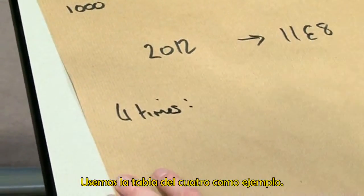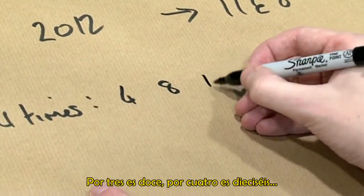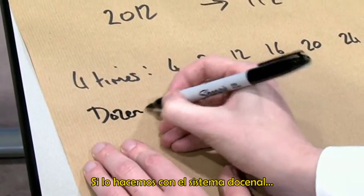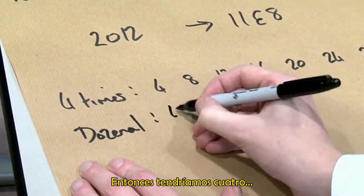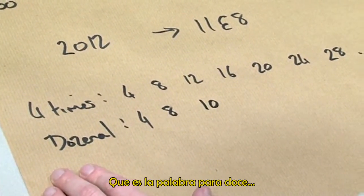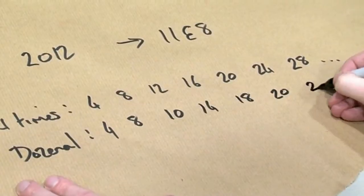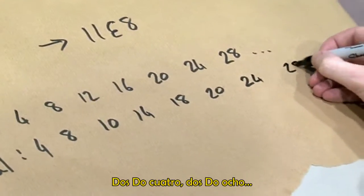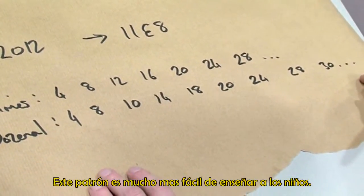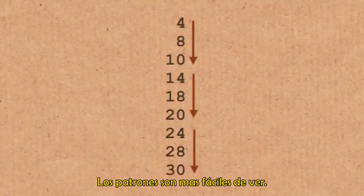Let's do a 4 times table. In decimal it looks like: 4, 8, 12, 16, 20. In the dozenal system it would be: 4, 8, do, do 4, do 8, 2 do, 2 do 4, 2 do 8, 3 do, and so on. The pattern — 4, 8, 0, 4, 8, 0 — is a much easier pattern to teach children, and the patterns are much easier to see.